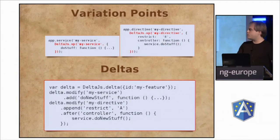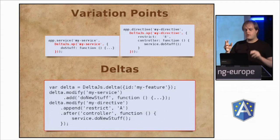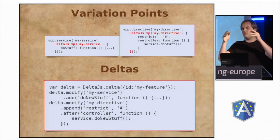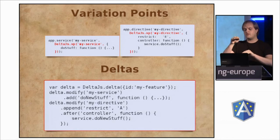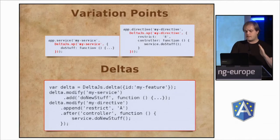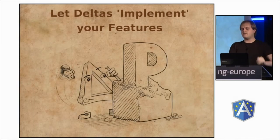The solution I came up with is variation points and deltas. Variation points: you mark the places where changes might happen. Then deltas are able to change those values, and you can basically put all the related changes in the same place. So that's this example but in deltas — you build the deltas, and the deltas implement your features.